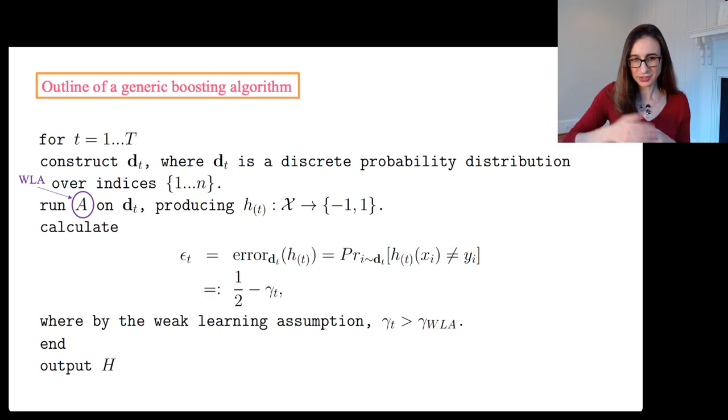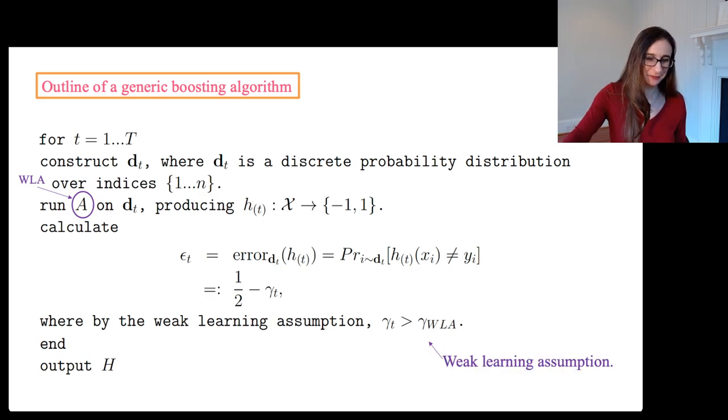The weak classifier is called h_t. And then you calculate the error rate of h_t on that weighted data set. This formula there is just the weighted error rate. The key thing is that the error rate is slightly less than a half. Because it's a weak learning algorithm, it's got to be less than a half, it has to be slightly better than random guessing. We have our weak learning assumption that that error rate is slightly less than one half, at least the amount gamma_wla that's guaranteed by the weak learning algorithm.